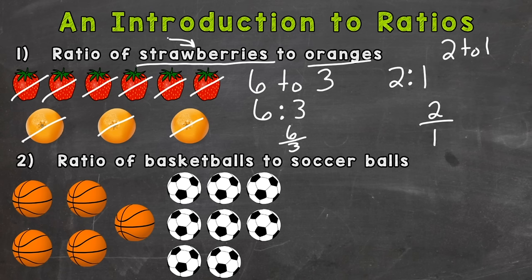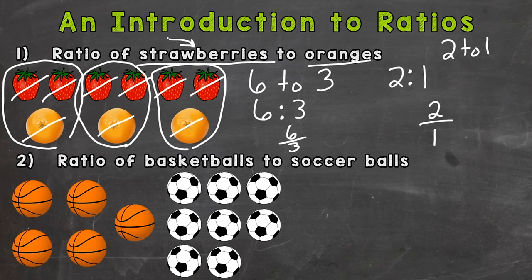And let's take a look at our picture over here. For every two strawberries there is one orange. So our simplified ratio matches our picture over there of the strawberries and oranges. Okay, so again we can use the word 'to', a colon, or a fraction.